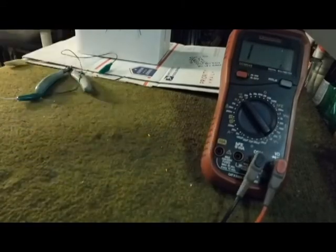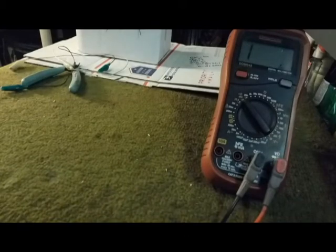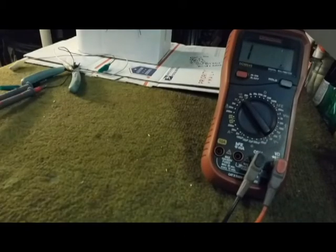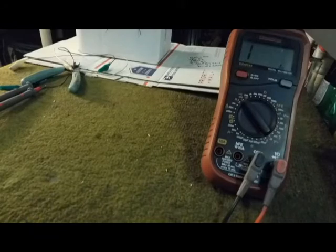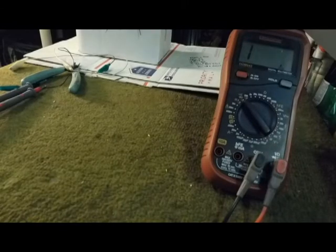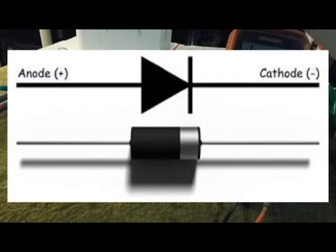Now the exact same test on your meter can also help you test diodes. Diodes have polarity, which means one end is positive and the other end is negative, otherwise known as an anode and a cathode. The anode is the positive point and the cathode is the negative point.